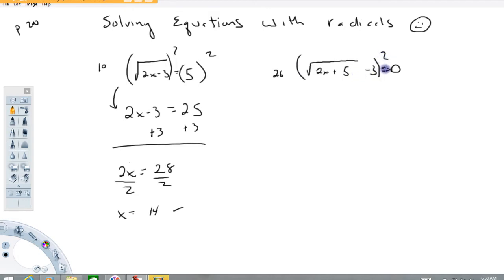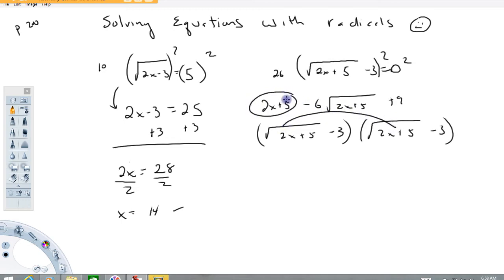If I squared both sides right now, 0 squared we'd still have 0 on the right but this would have to be foiled and if I foiled it, if we multiplied it out what we would end up with is 2x plus 5 minus 6 times the square root of 2x plus 5 plus 9. The first term would give me this, outer term and inner terms would give me this and the last term would give me the 9. We'd still have a radical here if we square this equation as it sits. So it wouldn't do us any good.